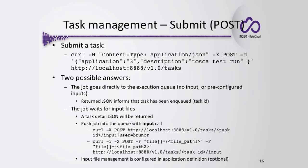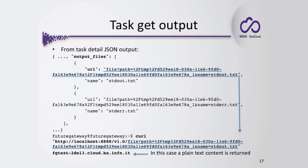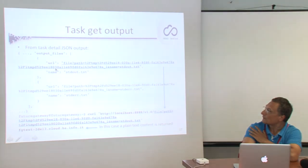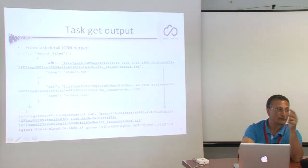To provide input files, use the tasks entry point with the task ID as a POST request, using the -F flag to provide each input file with its full path. If the task is waiting for input but you have no input files to provide, you can send the POST request without specifying any input file to finalize the task execution.